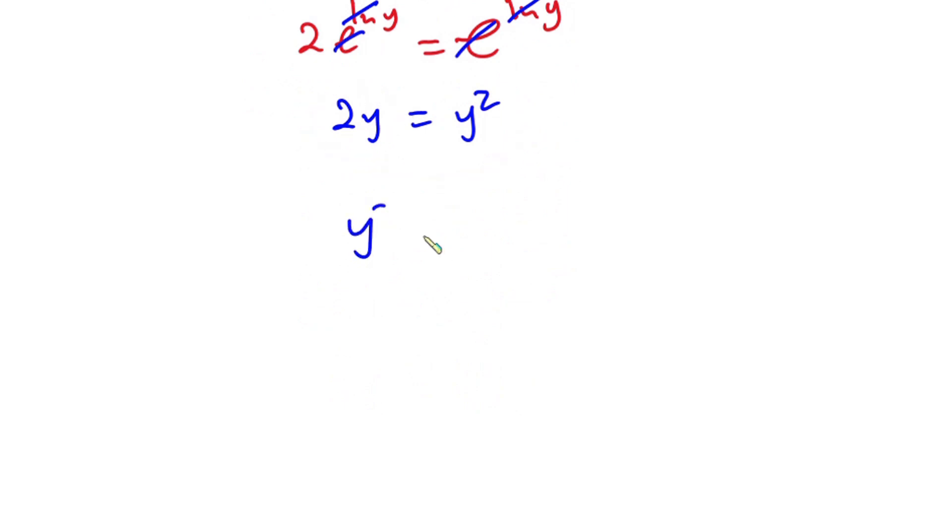Now, let's go ahead and move this one to the right hand side. So we have y to the second power minus 2y is equal to 0. We have y here, y here, we can factor y out. So we have y into y minus 2 and this is equal to 0.